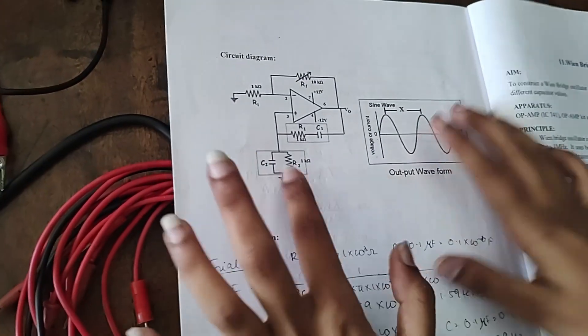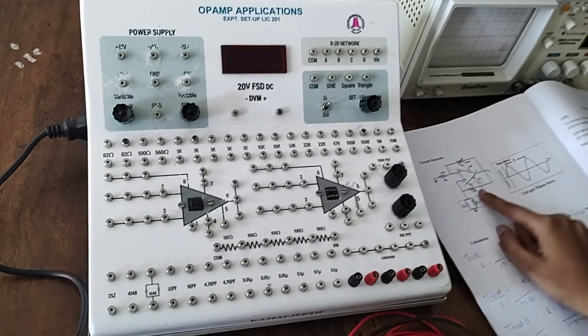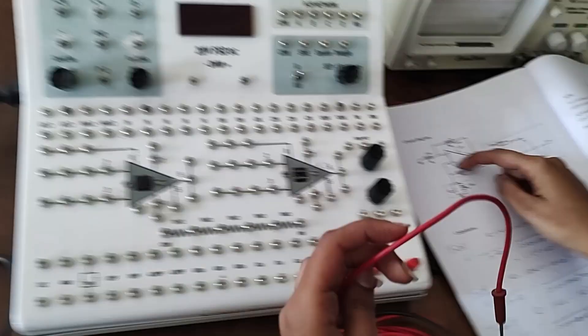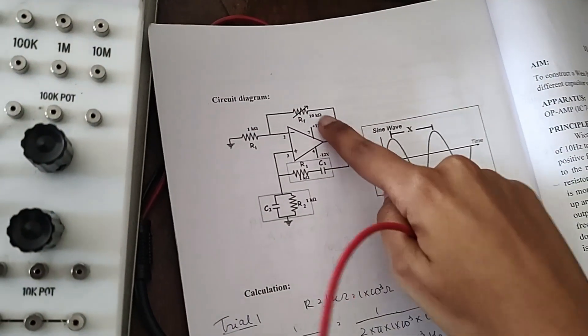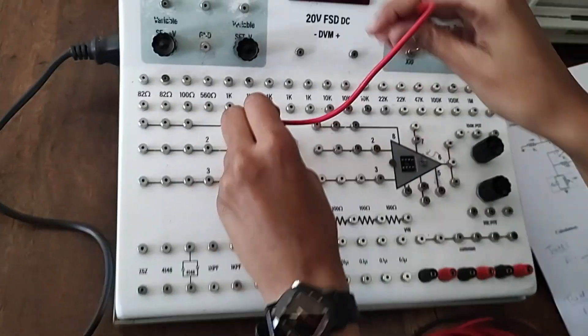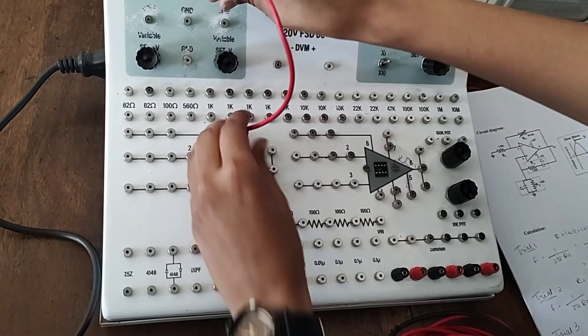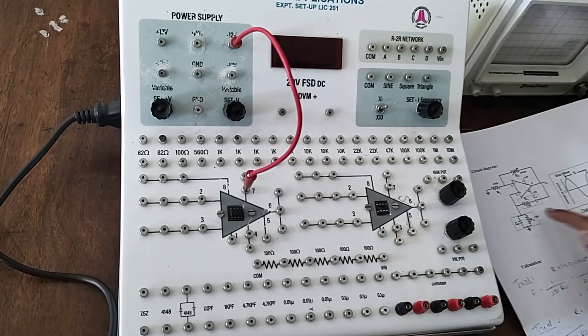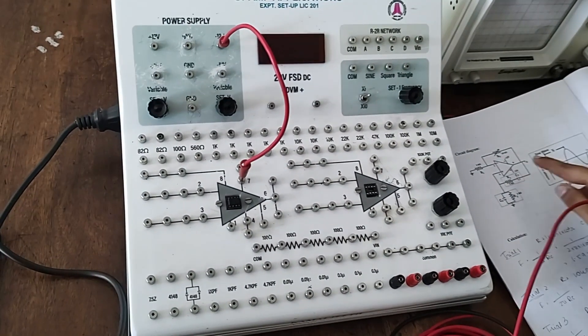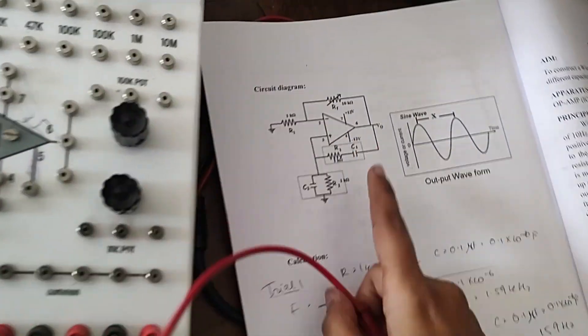This is our circuit diagram. The first connection we do is from 7 to plus Vcc, 7 to plus 12V. And then we'll do 4 to minus 12V, 4 to minus 12V.